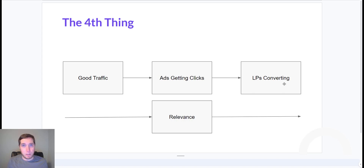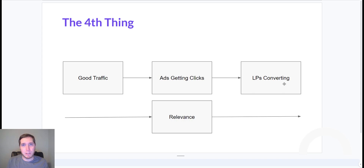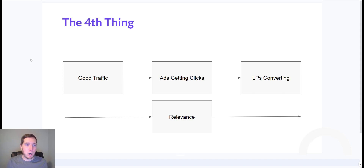If there's a mismatch in relevance — like somebody searching for ceramic coating and you show them an ad for paint protection film — that's not going to be relevant. It needs to be very specifically relevant to what somebody searched, and the more relevant you can make that process, the better. So first we'll talk about traffic — keywords, match types, negative keywords.